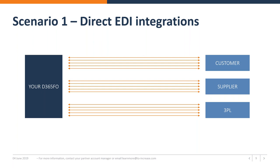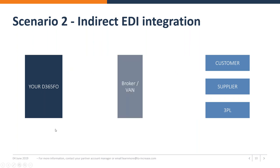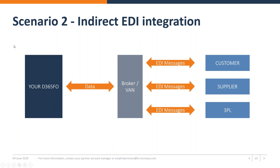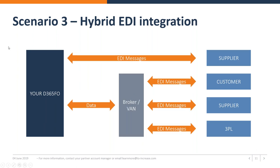For some integrations — especially heavy ones with large volumes of data going back and forth — a direct integration may be ideal. But what we see more and more is having a broker or VAN in between, where you have one data flow with all the data you need, and the broker splits and matches those messages with the needs that customers and suppliers have, in the different formats they want. And there may also be a preferred direct integration for some partners, creating a hybrid EDI setup.